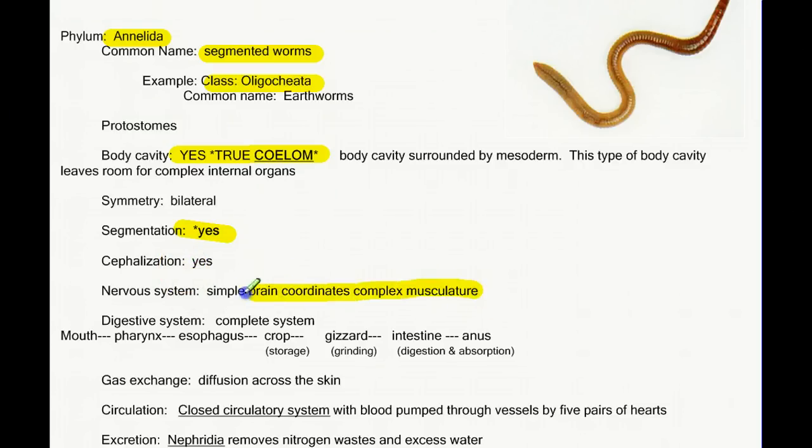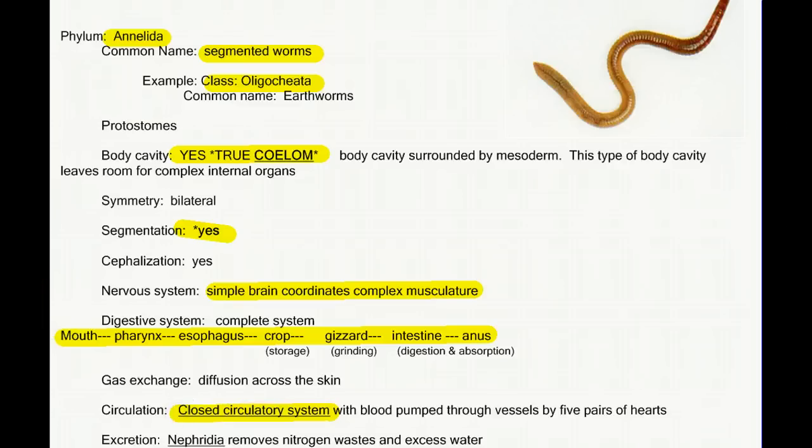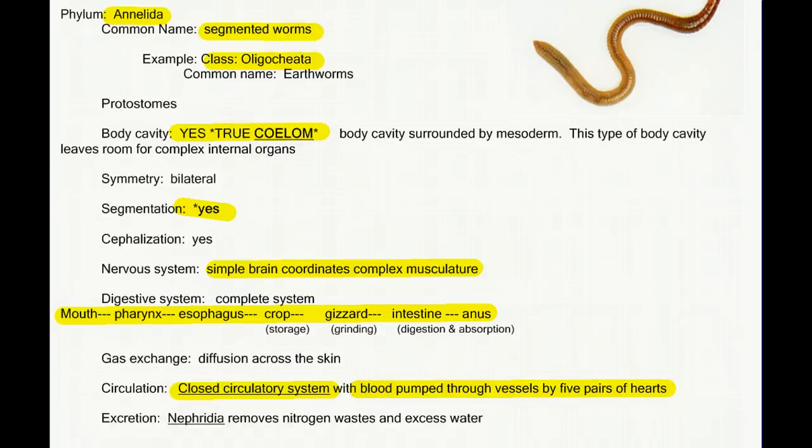We have this definitive segmentation. We have a more complex musculature and a brain to coordinate it. And a more advanced, kind of complicated, more complex digestive system with some different structures in there that we'll talk more about in class. But besides the coelom and the segmentation, the other big step forward that I want to talk about is the closed circulatory system. For the first time, we have a circulatory system. And not just having one, we have a fairly complex one. A closed system with blood that's pumped through vessels with five pairs of hearts. And for the first time, we have a structure that we're going to identify as an excretion organ to remove nitrogenous waste and excess water. The corollary to what we have as our kidneys. The earthworm has a structure called nephridia.